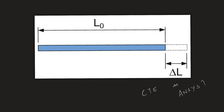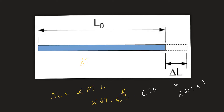Let's briefly touch upon the definition of coefficient of thermal expansion. If we have a bar, increase the temperature by ΔT, and it elongates by an amount ΔL, then ΔL can be written as α·ΔT·L, where α is the coefficient of thermal expansion, ΔT is the increase in temperature, and L is the original length. The thermal strain is simply α·ΔT, which is the change in length divided by the original length.